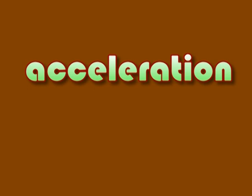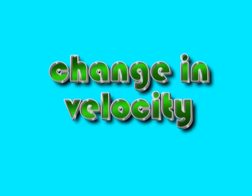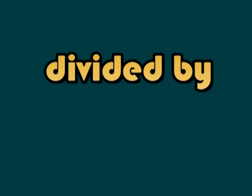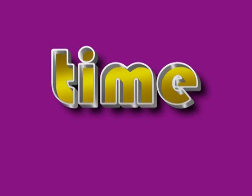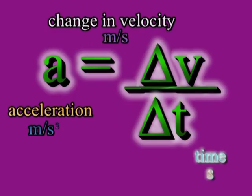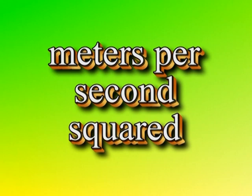To calculate the acceleration of an object, we get the change in the velocity and we divide it by the time that change in velocity takes. Acceleration is measured in meters per second squared.